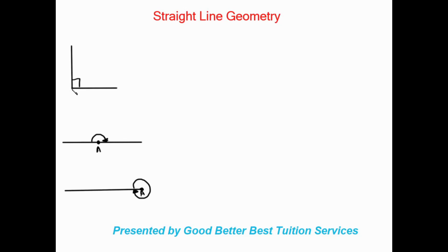We can see here that we have our basic right angle triangle, and we know that this is going to be equal to 90 degrees. Here we have our straight line angle, and our straight line angle we know is going to be equal to 180 degrees. And over here we have our angle going all the way around — a circle we know is going to be equal to 360 degrees.